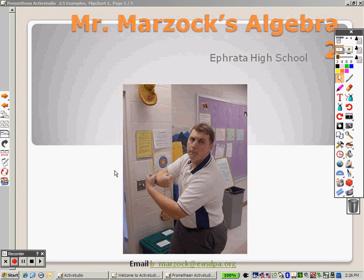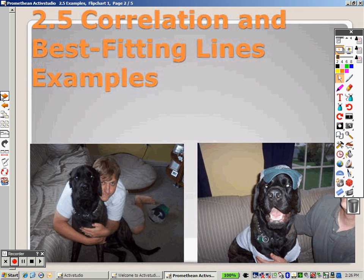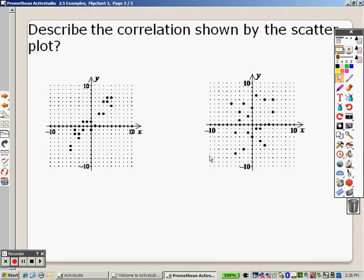This is section 2.5, and let's look at some examples. Section 2.5 covers correlation and best-fitting lines. What we're going to do here is start off simple, nice and simple.